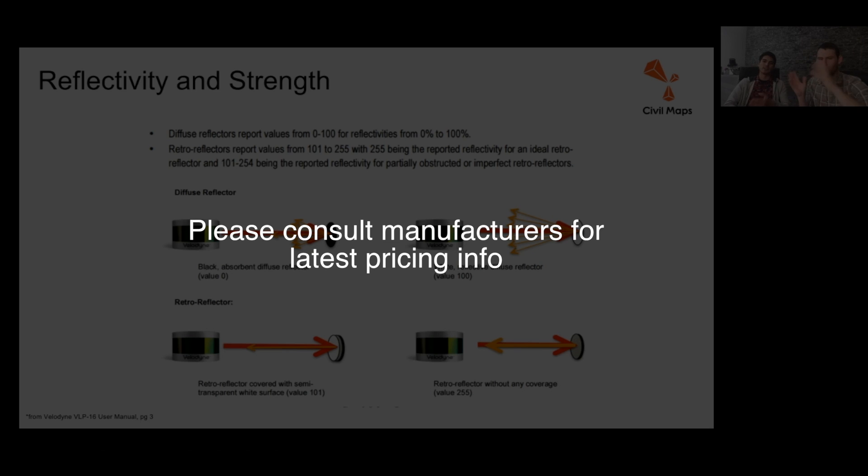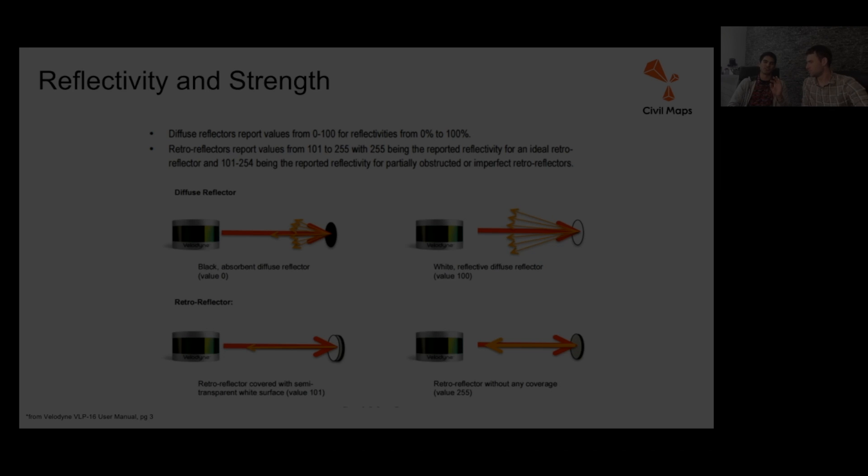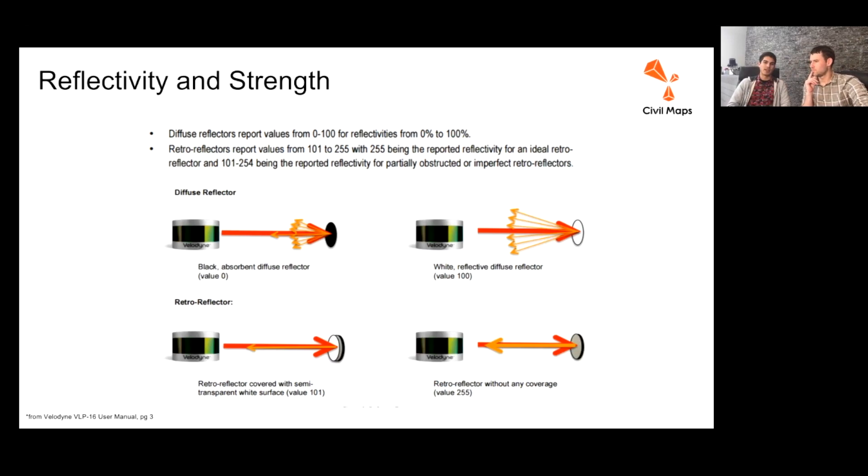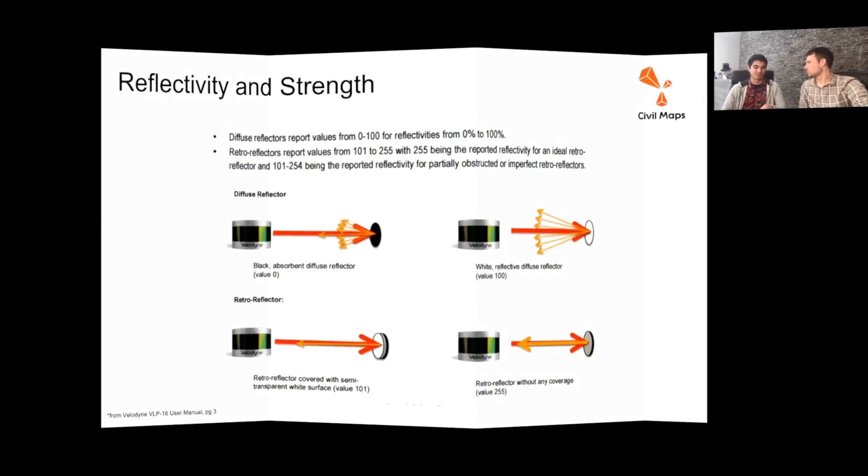Yeah, there's a full range. The Qanergy M8, I think, is in the $5,000 to $7,000 lower range. The HDL64 from Velodyne, I think, goes up to about $80,000. And the efforts in the industry to start utilizing solid-state LiDAR are trying to bring that cost significantly down.